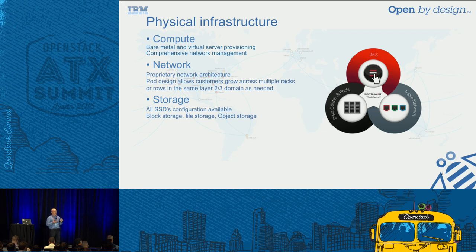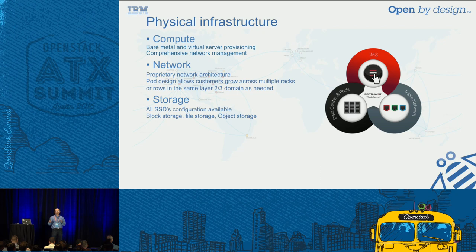You have a networking model consisting of three layers: public-facing interfaces, private interfaces, and management interfaces. That gives you quite a bit of flexibility in terms of working with the cloud and working with all the nodes.